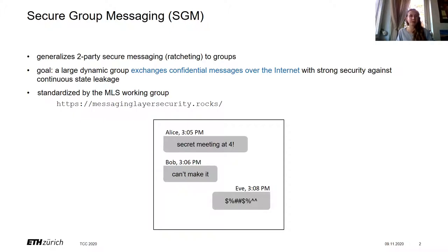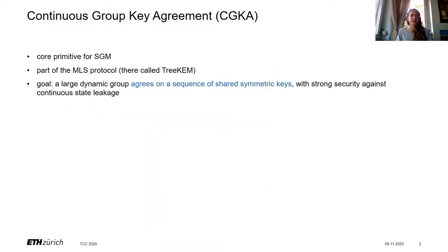We want some security even if the secrets of the users can continuously leak. Formalizing SGM security is particularly important now that the MLS working group is developing a protocol and a standard for SGM. Continuous group key agreement, or CGKA, is the core primitive for building SGM. It's also a part of the MLS protocol — their CGKA protocol is called TreeKEM.